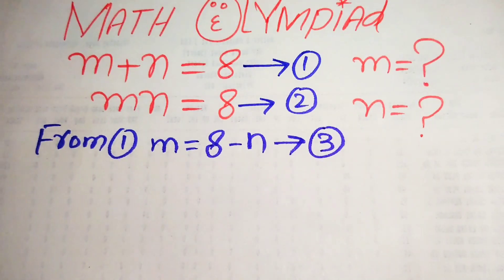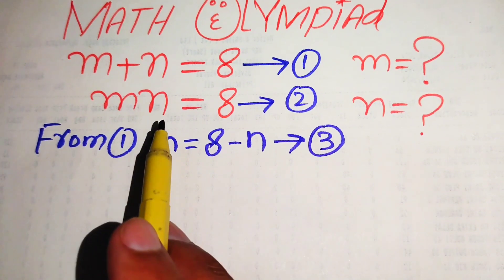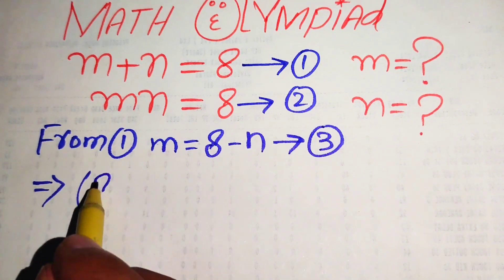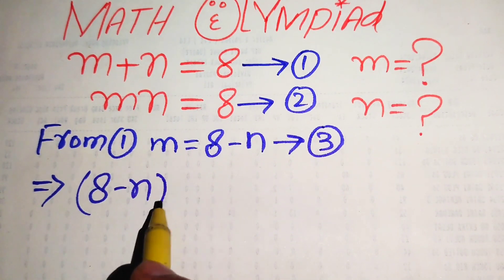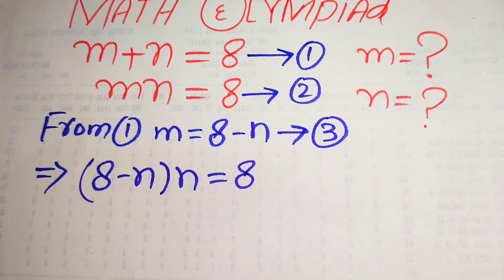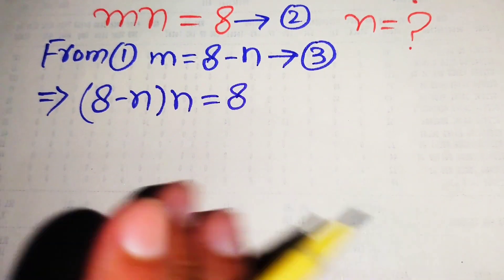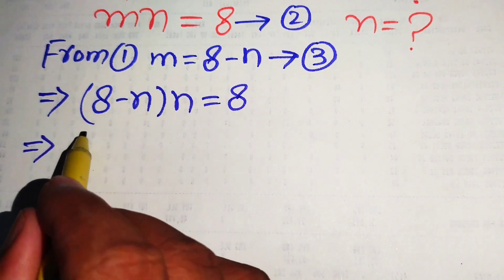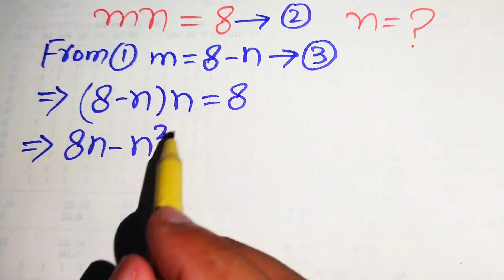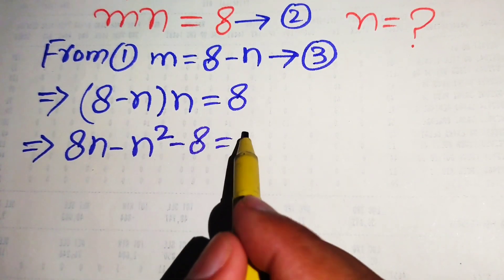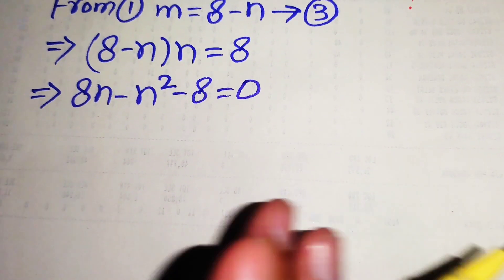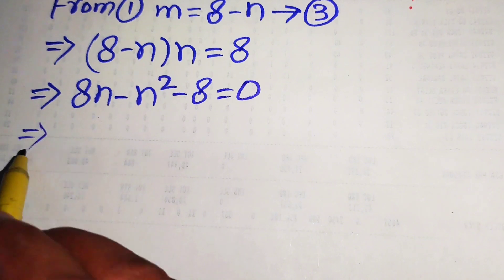Now we substitute this value of m in equation number two. Substituting m, we get 8 minus n, multiplied by n, equals 8. We multiply n on both terms and get 8n minus n squared. Moving 8 to the left hand side, we get 8n minus n squared minus 8 equals 0.